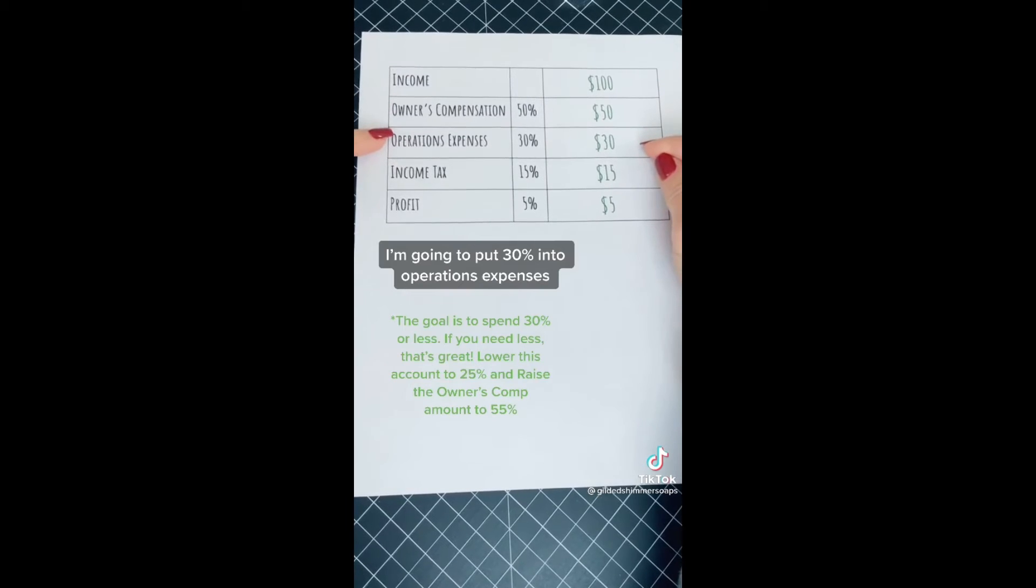I'm going to put 30% into operations expenses. This account is meant to pay for all the supplies and everything needed for the business. This one will have a debit card attached to it.